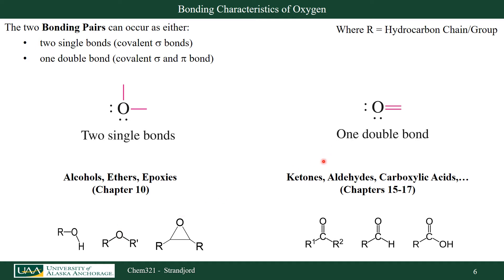Going to column six in our periodic table tells me that I have six electrons in my outermost valence shell. In order to fill that outermost shell with eight electrons, I'm going to either form two single bonds or one double bond around oxygen. My two single bonds are typical for alcohols, ethers, or epoxides. My double bonds are my ketones, aldehydes, carboxylic acids, esters, and acid chlorides — those we'll talk about in Chapters 15 and 17 next semester.